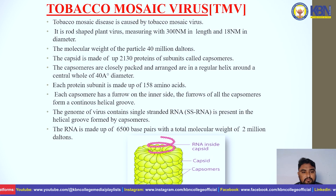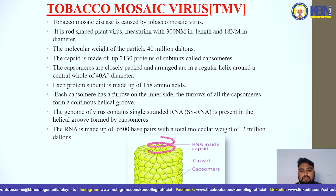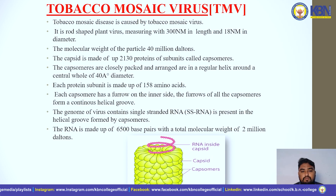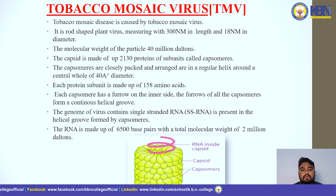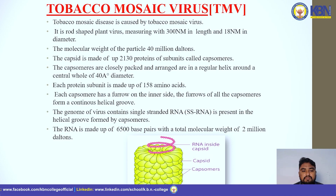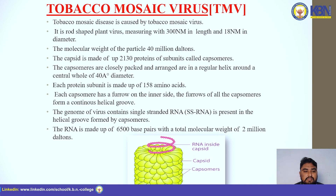The next virus is the Tobacco Mosaic Virus, or TMV. The tobacco mosaic disease is caused by TMV. It is a rod-shaped plant virus measuring 300 nanometers in length and 18 nanometers in diameter. The molecular weight of the particle is 40 million daltons. The capsid is made up of 2130 protein subunits called capsomeres.